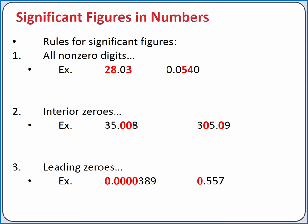Our third rule is that leading zeros, which occur to the left of the first non-zero digit, are not significant. These zeros are only placeholders.